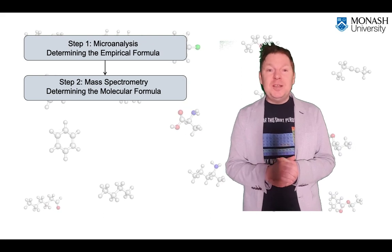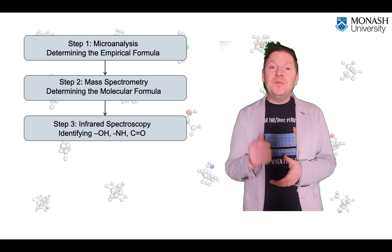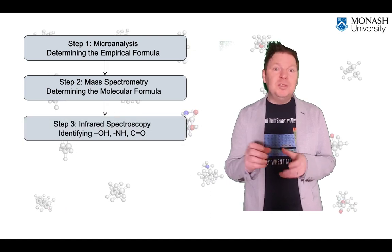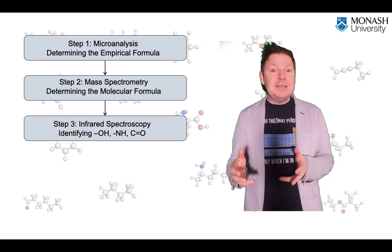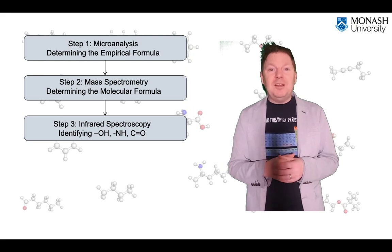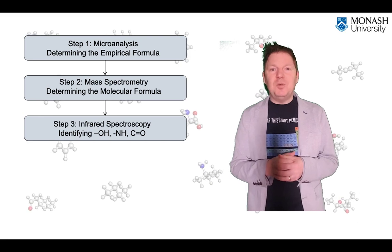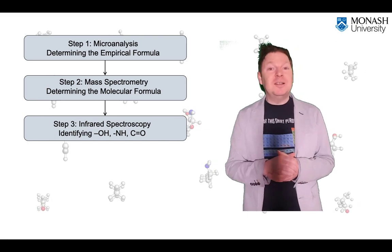Once you've got this, you can move on to things like infrared spectroscopy, which give you some clues about which functional groups are present. Is there a carbon double bonded to an oxygen? If so, is that a carboxylic acid? Is it an ester? Is it an amide? Well, you can work that out by looking at things like, is there an OH stretch band in the spectrum, and so on, to see if it's got an alcohol group or a carboxylic acid.